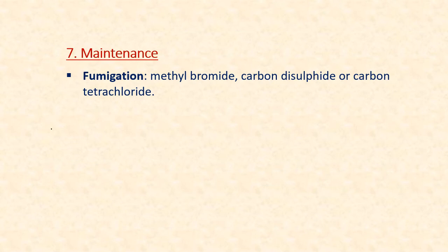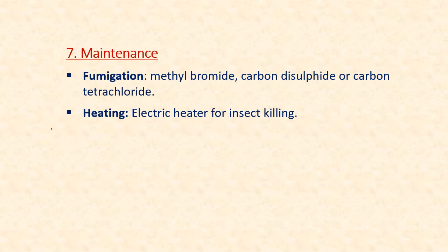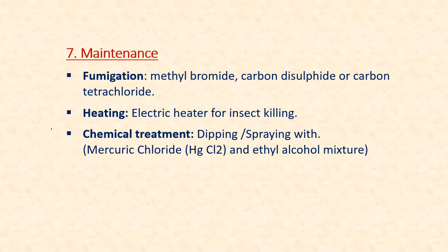The last step is maintenance. Fumigation is carried out using poisonous liquids like methyl bromide, carbon disulfide, or carbon tetrachloride, which are placed in small containers and kept in each herbarium case for about a week. Sometimes heating is also adopted for insect killing. Some herbaria use electric heaters instead of fumigation. Another method is chemical treatment — dipping material in insecticide before pasting, or spraying chemicals after pasting, using mercury chloride and ethyl alcohol.